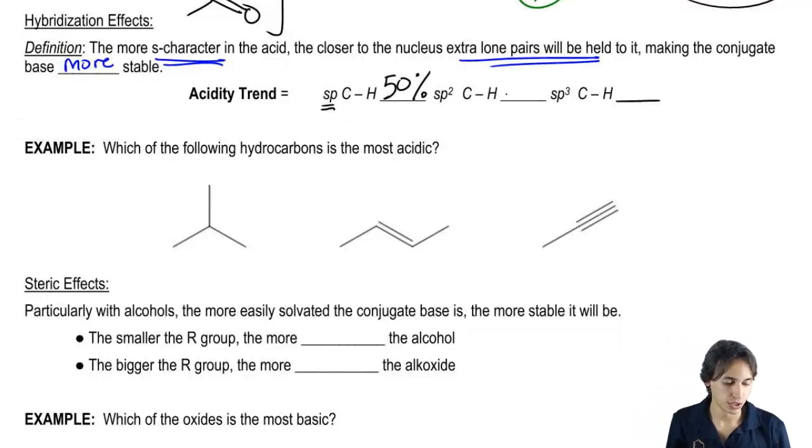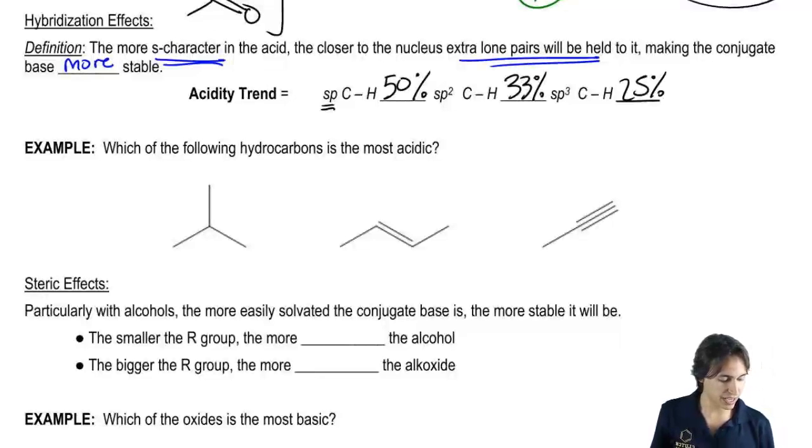sp2 would have 33% S character and then sp3 would have 25% S character. Now let's look at the pKa's underneath.